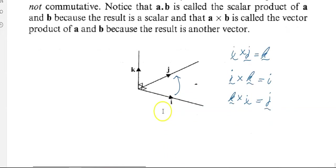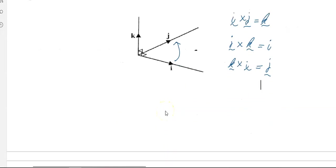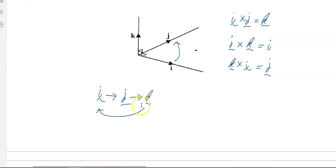That sounds difficult to remember, but here's how: they're alphabetical, or almost. i, j, k. If you go i cross j, you get k. If you did j cross k, you get i. And k cross i, you get j. Remember it in that order.